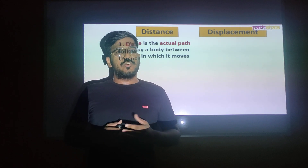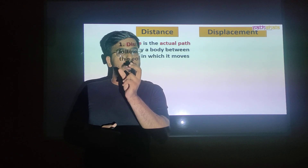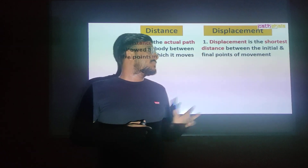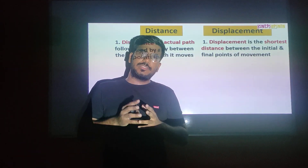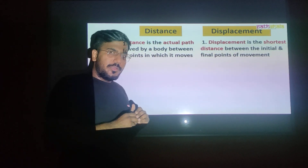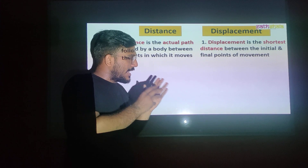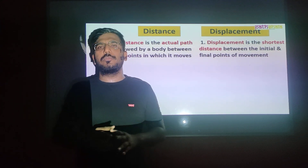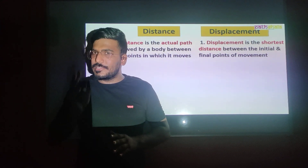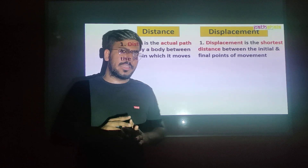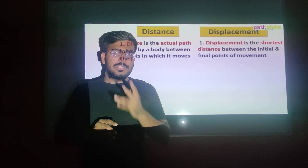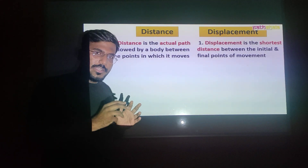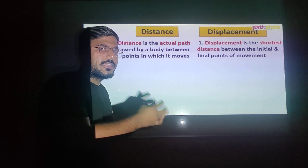Displacement is the shortcut or shortest path. So, displacement is the shortest distance covered by a body between the initial and final points of its motion. Once again: distance is the actual path, displacement is the shortest path.